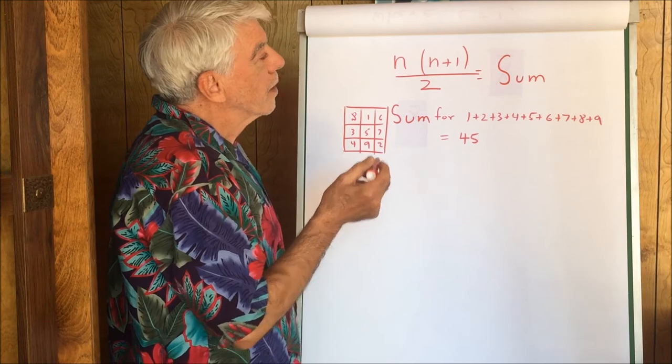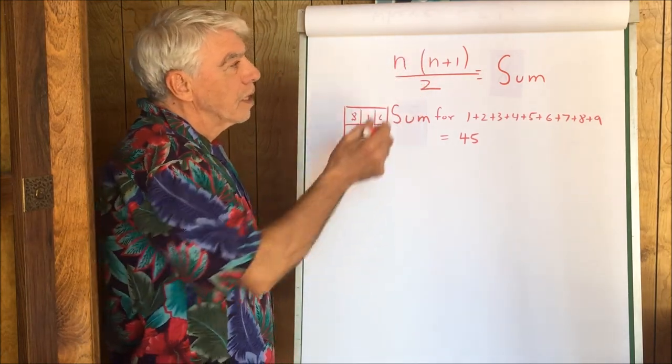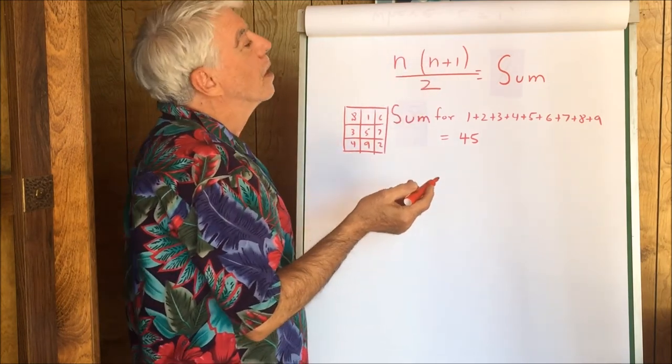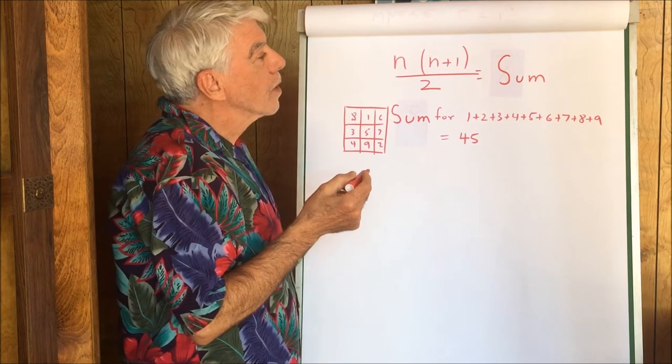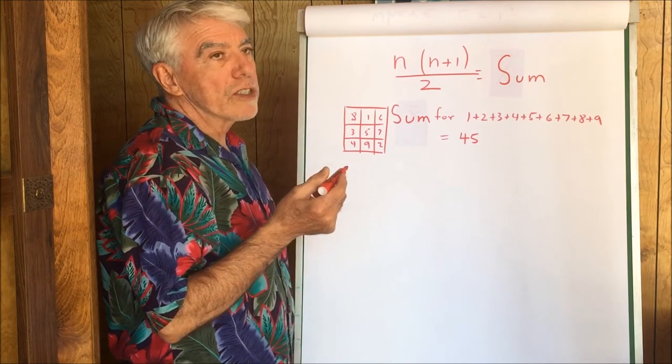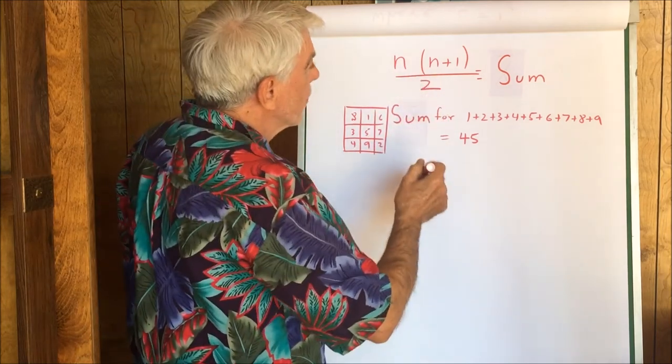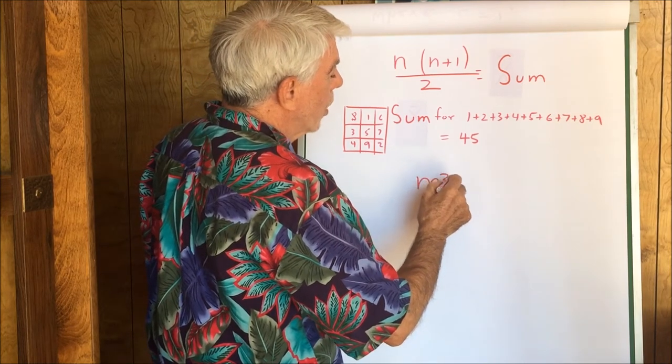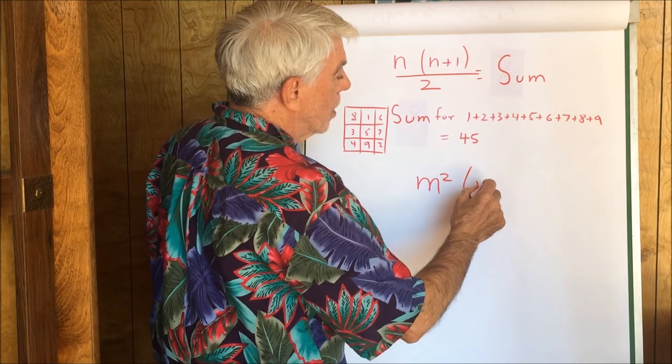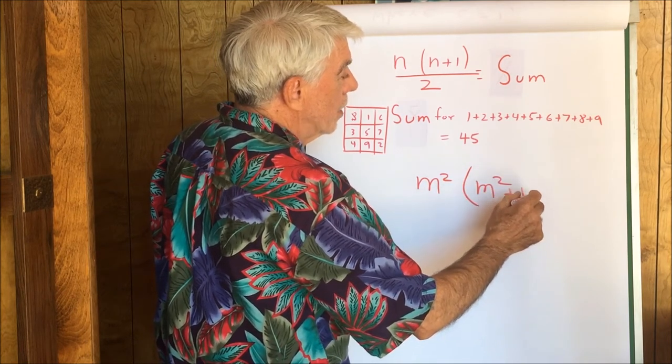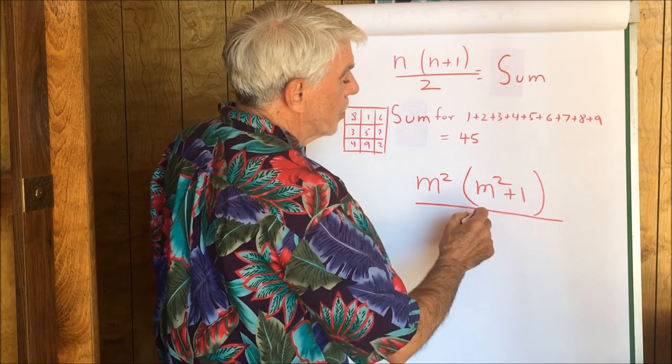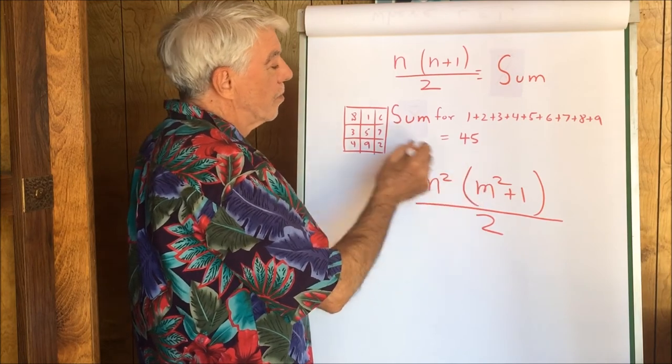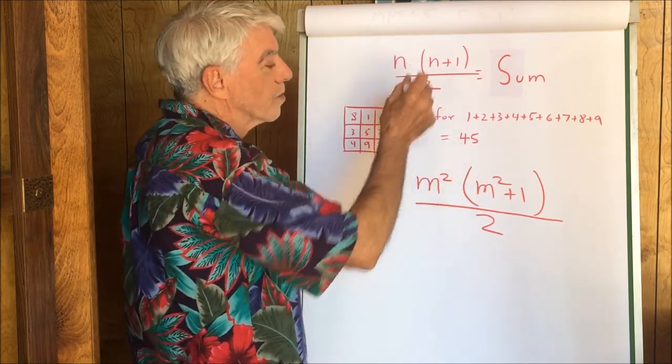Now, back on the original equation, it didn't use n, it used m. So let's change this equation. In this equation, n was the last number, 9. In the initial equation that we started with, we used the size of the matrix which was 3. So, let's rewrite that equation using m. m squared times m squared plus 1 divided by 2. These two equations are the same because m, which in this example here is 3, squared gives us the 9.